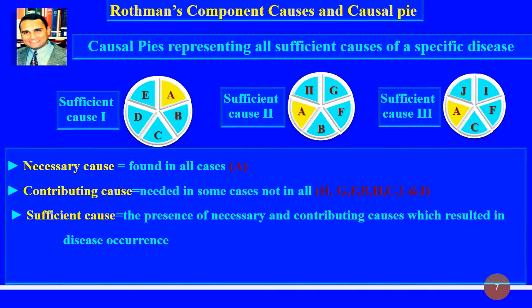Some component causes are needed in some cases, not in all. The component letters include H, G, F, P, C, I, and J. A sufficient cause is the presence of necessary and contributing causes which result in disease occurrence.